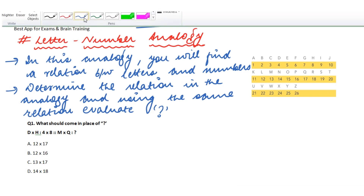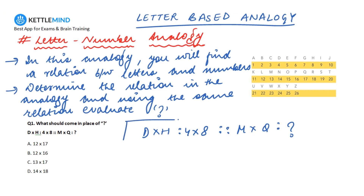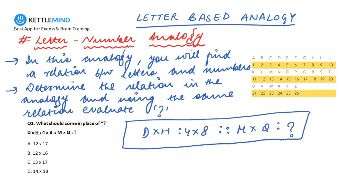Let us start with the first question. The first question says: D cross H is related to 4 cross 8. On the similar lines, what is M cross Q related to? So the question is: D cross H is related to 4 cross 8 — on the similar lines, what will M cross Q be related to?